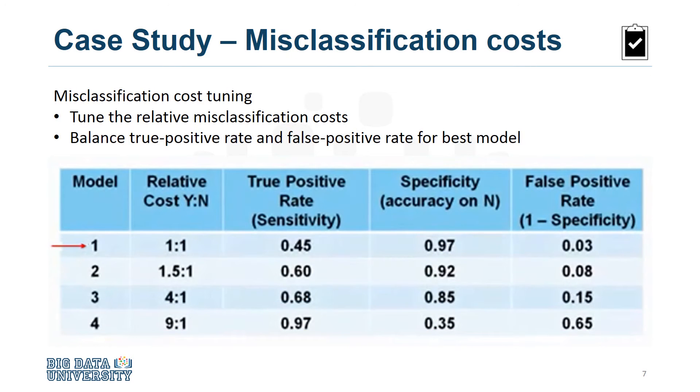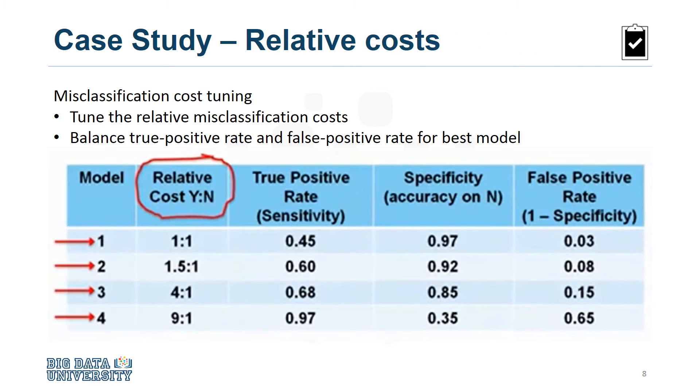Let's look at one way to find the optimal model through a diagnostic measure based on tuning one of the parameters in model building. Specifically, we'll see how to tune the relative cost of misclassifying yes and no outcomes. As shown in this table, four models were built with four different relative misclassification costs.